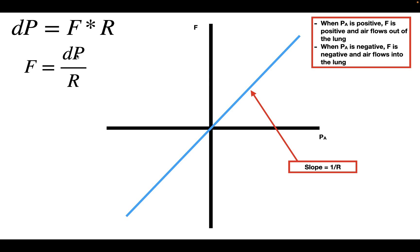If the alveolar pressure is positive or greater than zero, the flow is positive, meaning air is going to flow out of the lung, because the pressure inside the alveoli is greater than the pressure in the atmosphere. The opposite is true when the alveolar pressure is negative — flow is negative, and air will flow into the lung. That covers the most important points from this graph. Now we're going to see how these different variables, both static and dynamic, change during the course of breathing.